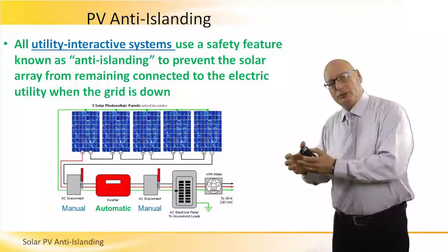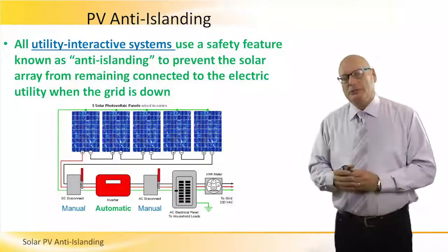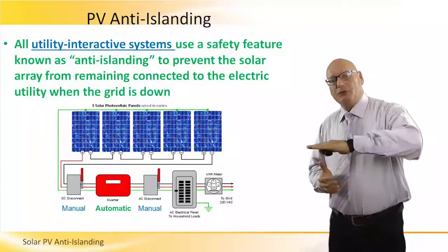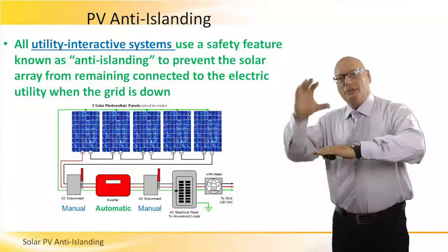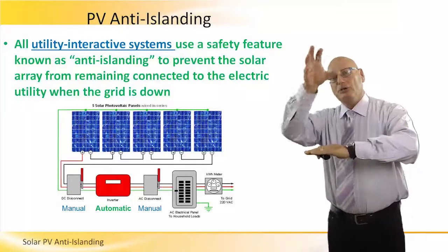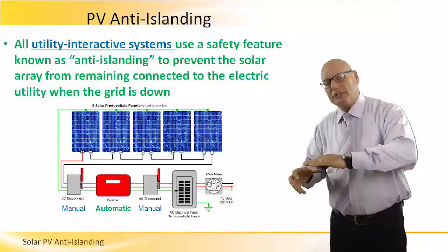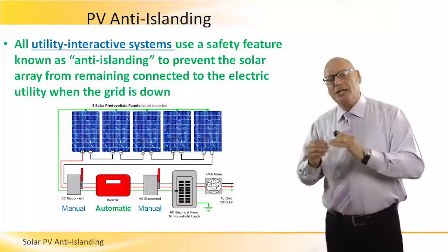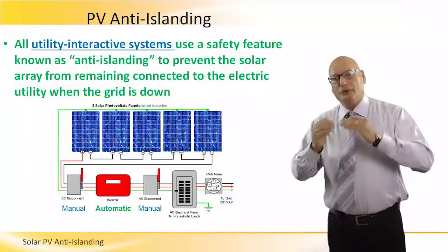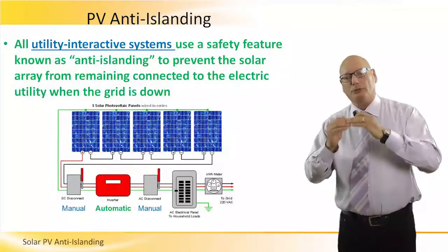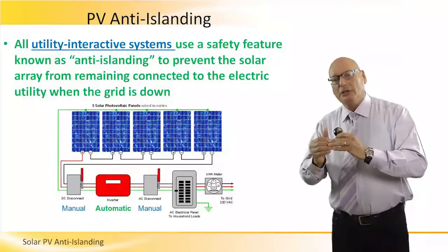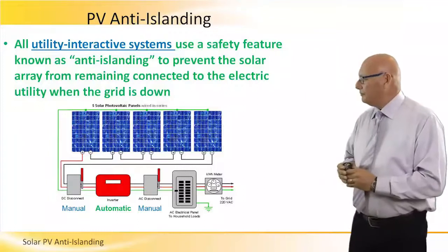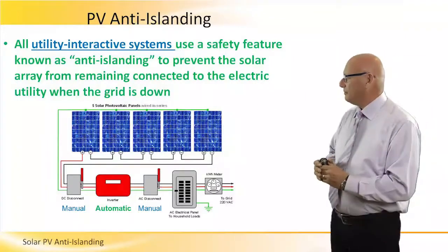The energy comes out in the form of DC voltage that goes to the inverter. So even when the grid is cut down, the PV system does not know it and continues to generate electricity. For this we have what is called automatic anti-islanding, to prevent the solar array from remaining connected when the grid is down.